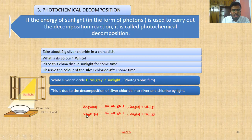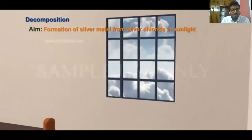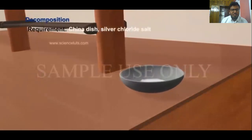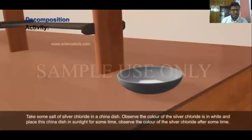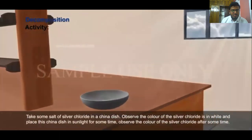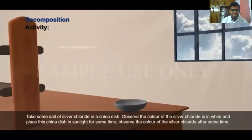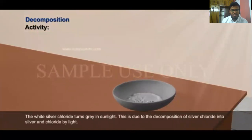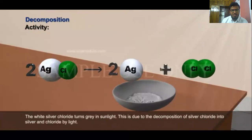Activity: Formation of silver metal from silver chloride in sunlight. Take some silver chloride salt in a china dish. Observe its color — it is white. Place this china dish in sunlight for some time. After some time, the white silver chloride turns gray in sunlight. This is due to the decomposition of silver chloride into silver and chloride by light: 2AgCl → 2Ag + Cl₂.